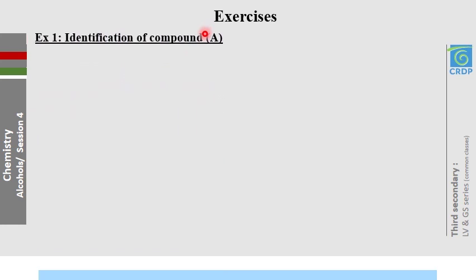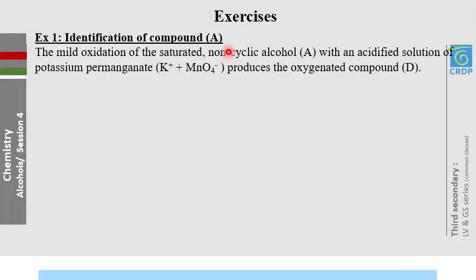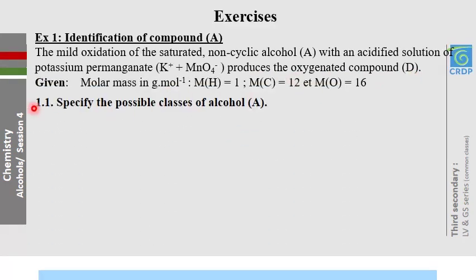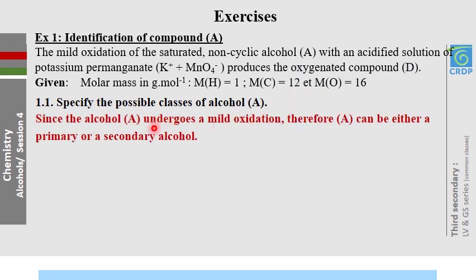Exercise 1: identification of compound A. The mild oxidation of a saturated non-cyclic alcohol A with an acidified solution of potassium permanganate produces compound D. Part 1.1 — specify the possible classes of alcohol A. Since it has undergone oxidation, it must be either a primary or secondary alcohol, because only primary and secondary alcohols can undergo oxidation.